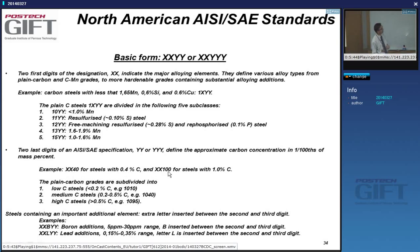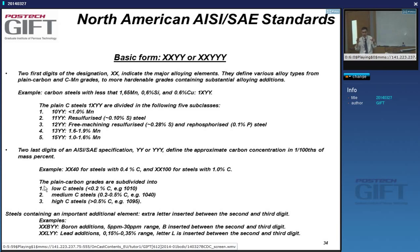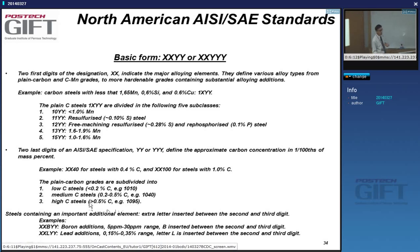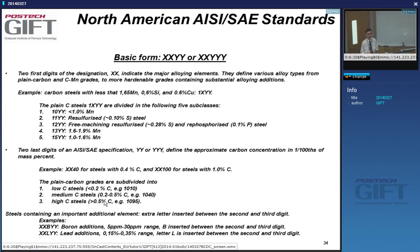You can divide steels into low carbon (less than 0.2%), medium carbon (0.2–0.5%), and high carbon (more than 0.5%). In the US and North America, this is a very common way of referring to steels: low carbon, medium carbon or engineering steel, and high carbon. It's good to remember that 'high carbon' in the US means more than half a percent — it could be as low as 0.5%.